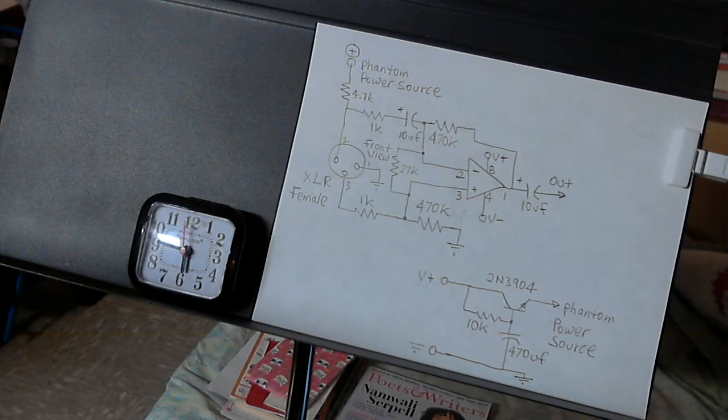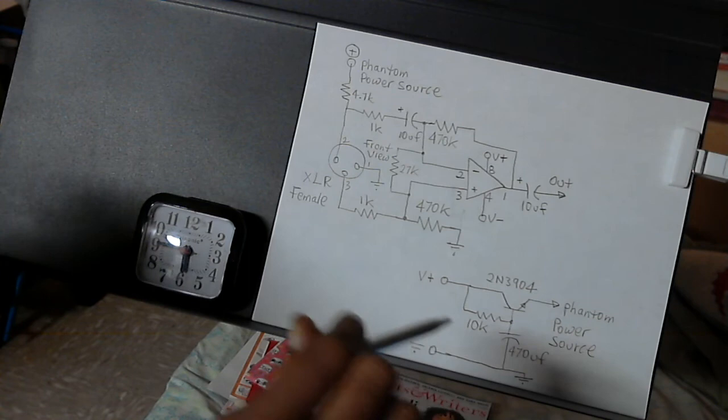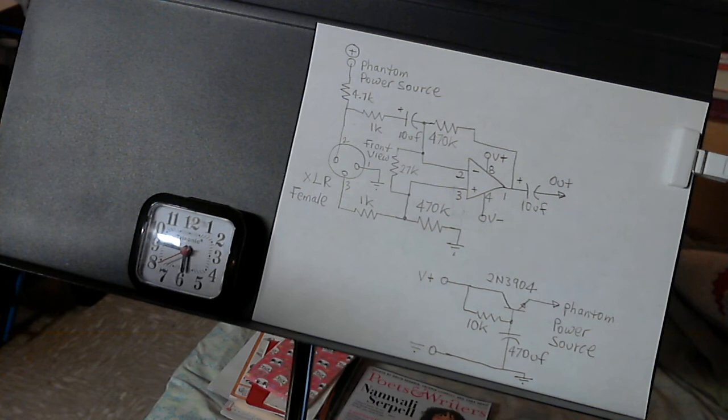Okay, so this is 10k. I did mention this from collector to base, and from base to ground is 470 microfarads, and I'm thinking this should provide good filtering, so that there's no hum going into the microphone.